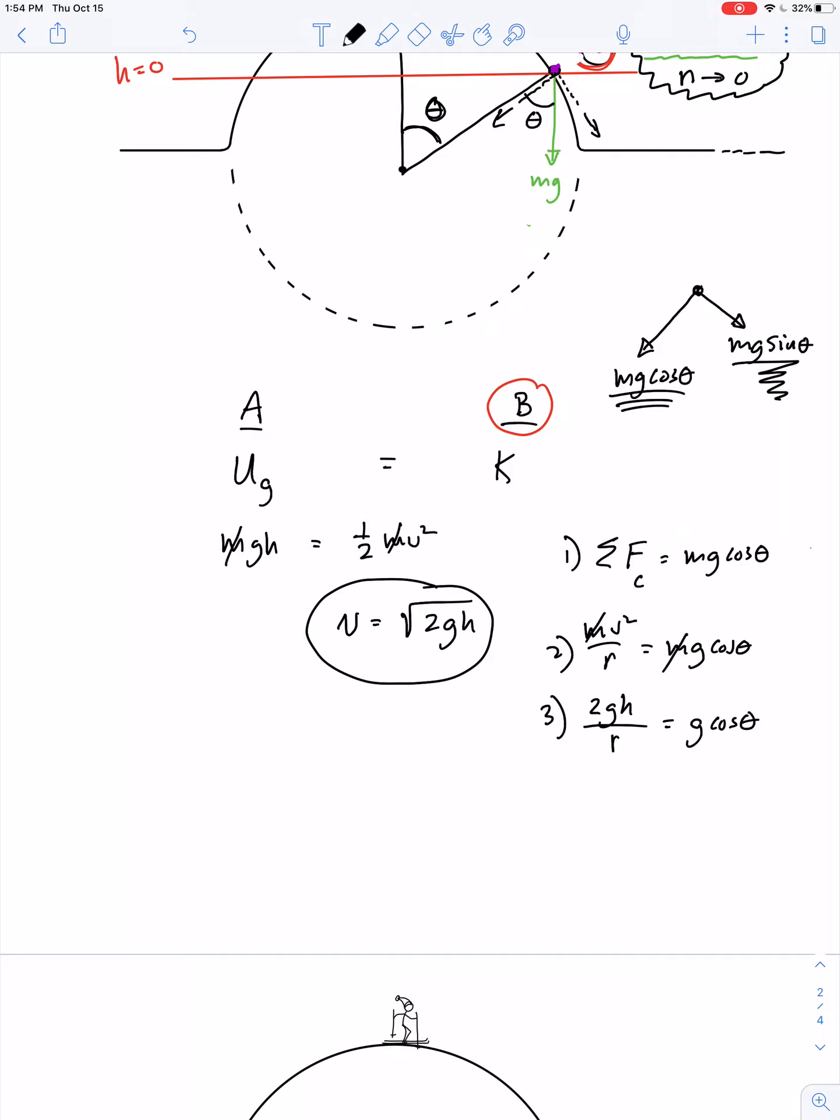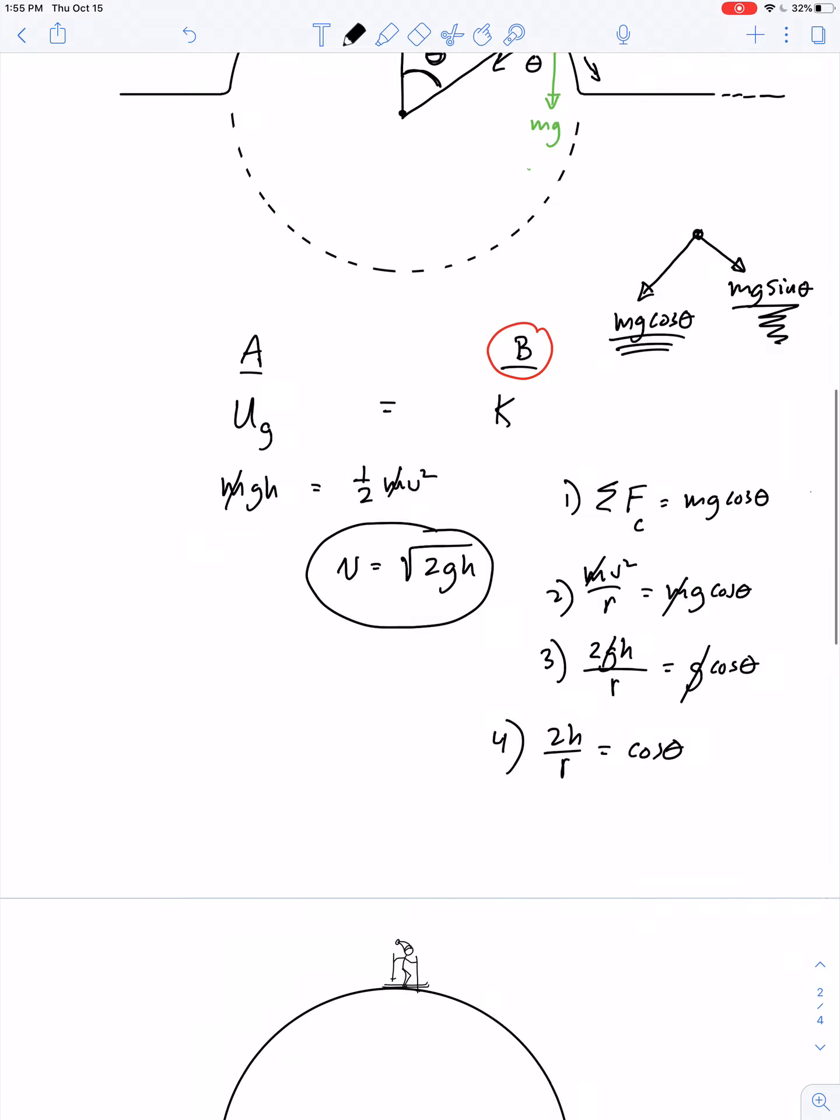Hey, I think a skier on any planet... Wait, are there snow-covered hills on any other planets? Well, that's beside the point. Anyway, g cancels out. So 2h over r equals cosine theta.